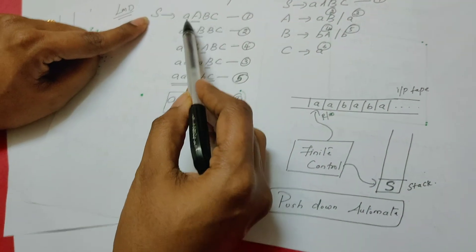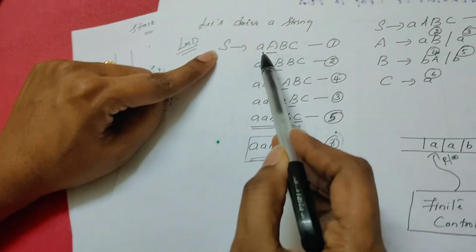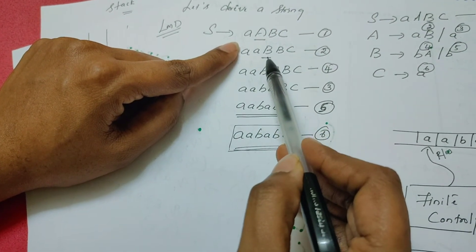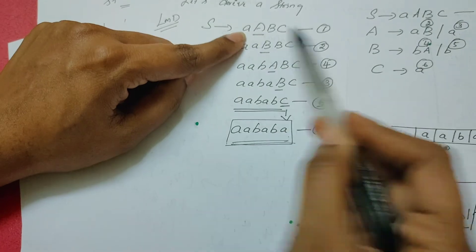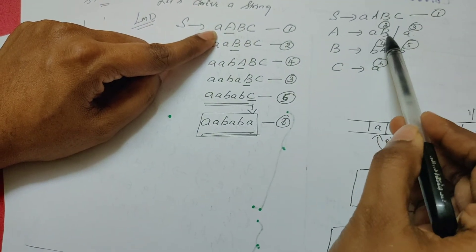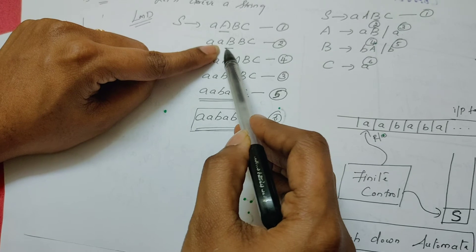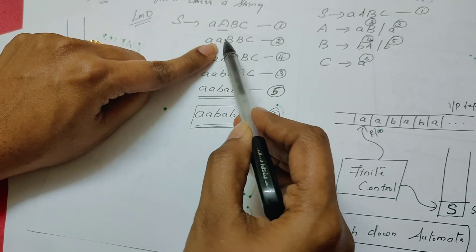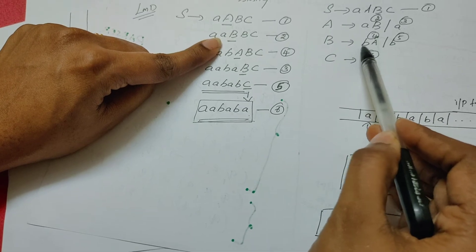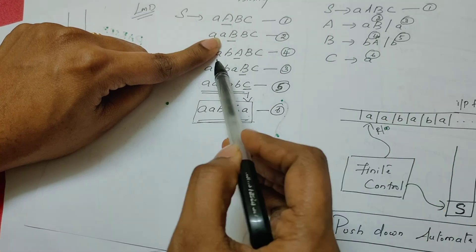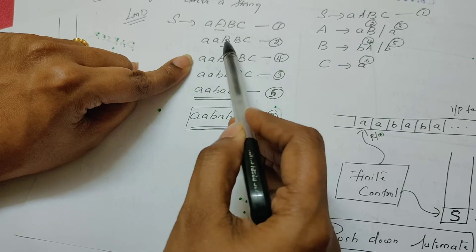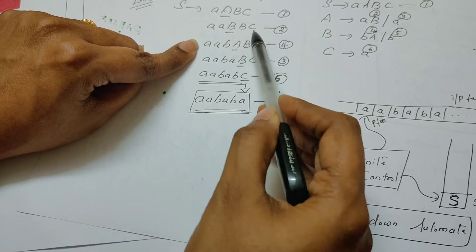S is replaced by the option A, A, B, C. Then I chose the leftmost variable to derive at the next step. This A can be replaced by either A, B or A — I chose A, B. Once again I chose the leftmost variable: B can be replaced by either B, A or B — I chose B, A. So B is replaced by B, A, giving us A, A, B, A, B, C.